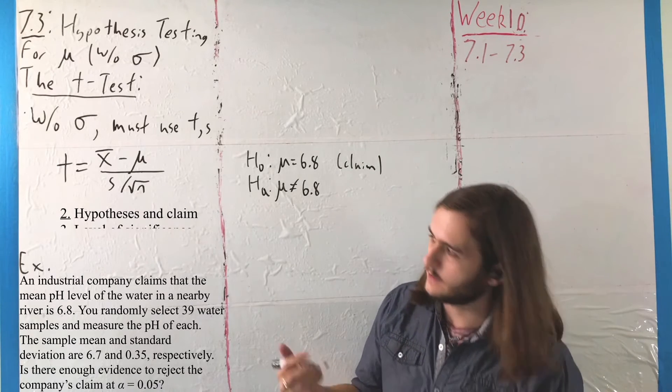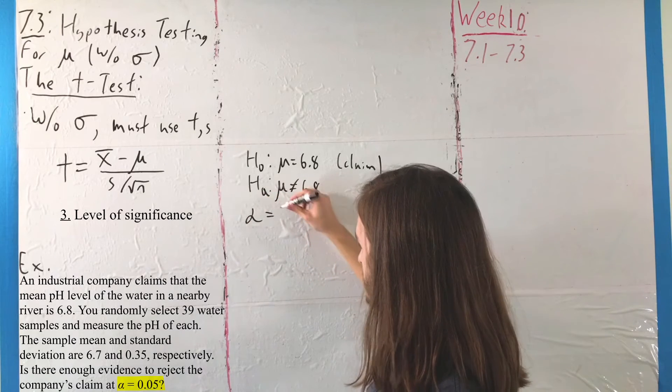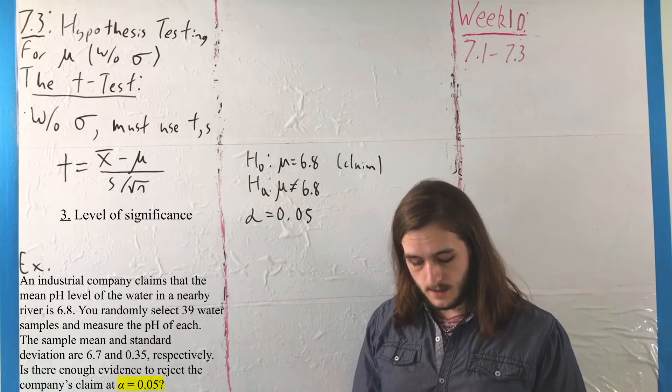From there, we want to identify our level of significance alpha, where, as always, that's our given value representing the desire we have to be reasonable here, 5%.